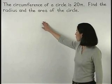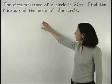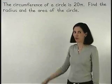The circumference of a circle is 20 pi. Find the radius and the area of the circle.